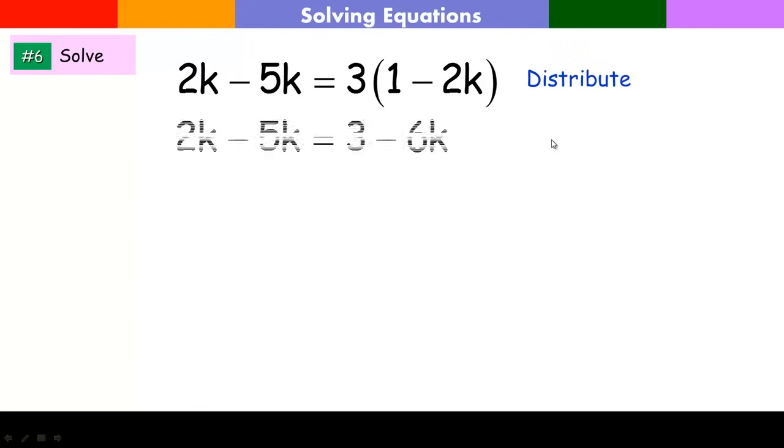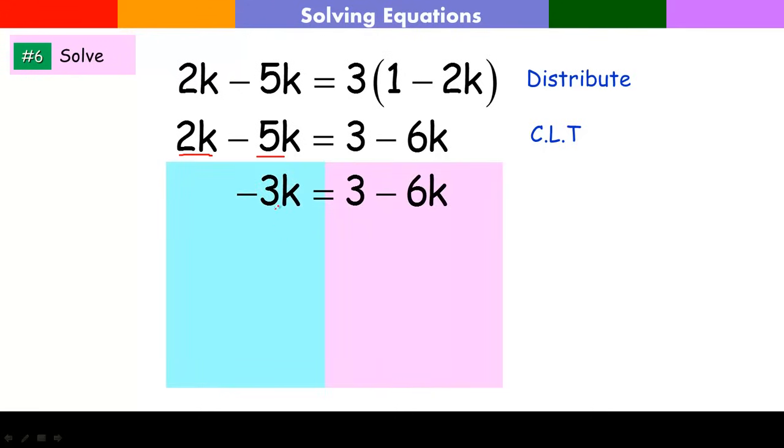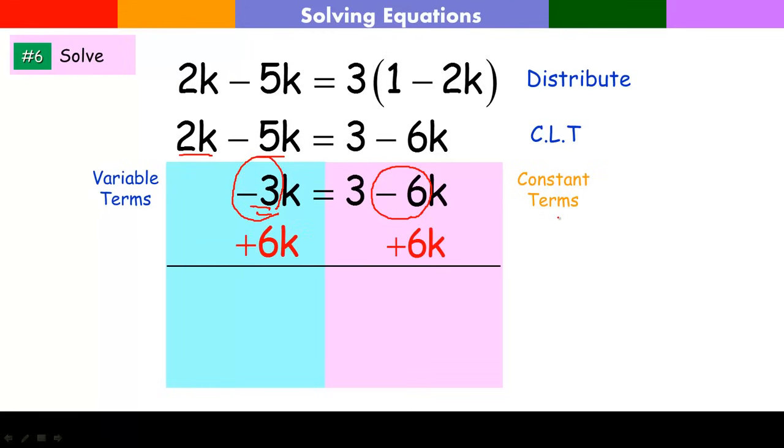So I'm going to distribute here. I'm now going to combine like terms on this side. So I've cleaned up the left side and the right side, and now I can go about picking a side. Notice negative 3 and negative 6 as my coefficients. Negative 3 is actually larger, so I'm going to use this as my variable side and add 6k to both sides. And notice what happens. That keeps this positive. I like to keep it positive as much as possible. Divide both sides by 3. We get k equals 1.